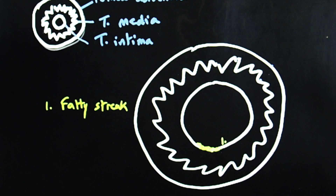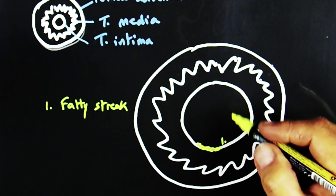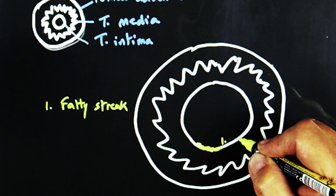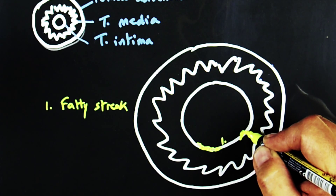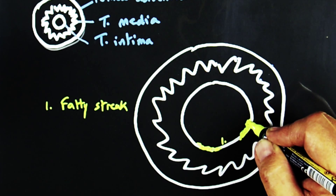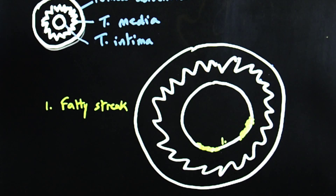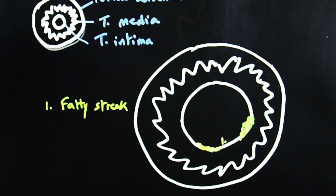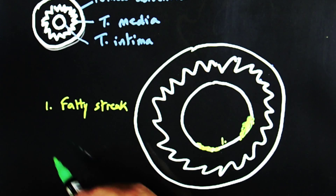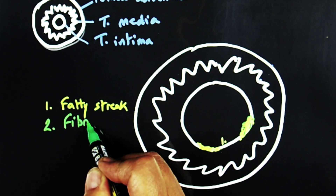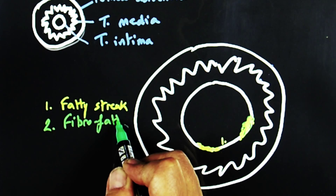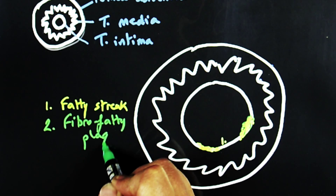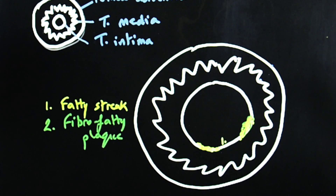With increasing deposition of lipid, eventually some of the lipid within the intimal layer becomes extracellular. This extracellular lipid often induces a local tissue response, which includes fibrosis and collagen formation. This now causes a degree of distortion within the lumen, and a raised plaque-like lesion is formed. This combination of lipid with fibrosis is the second stage of atheroma, which we can describe as the fibro-fatty plaque.